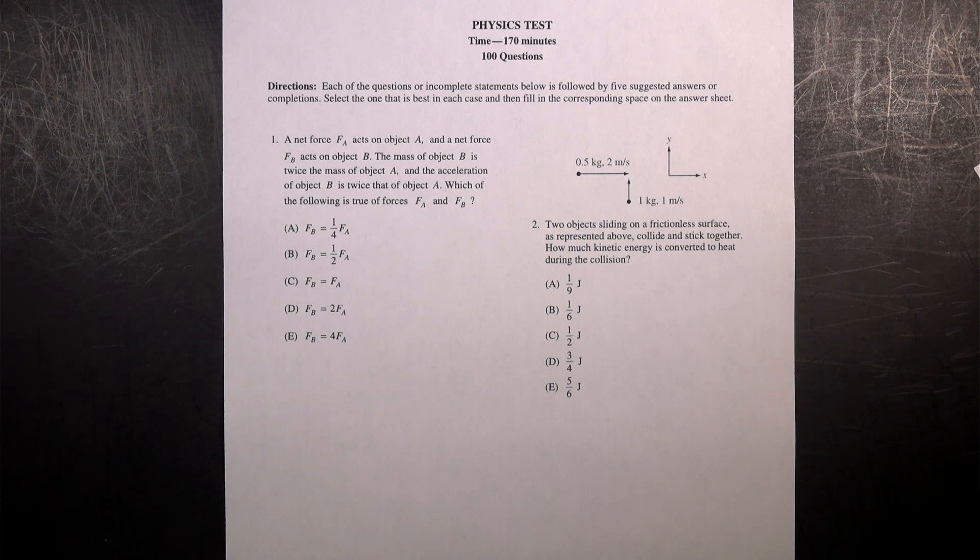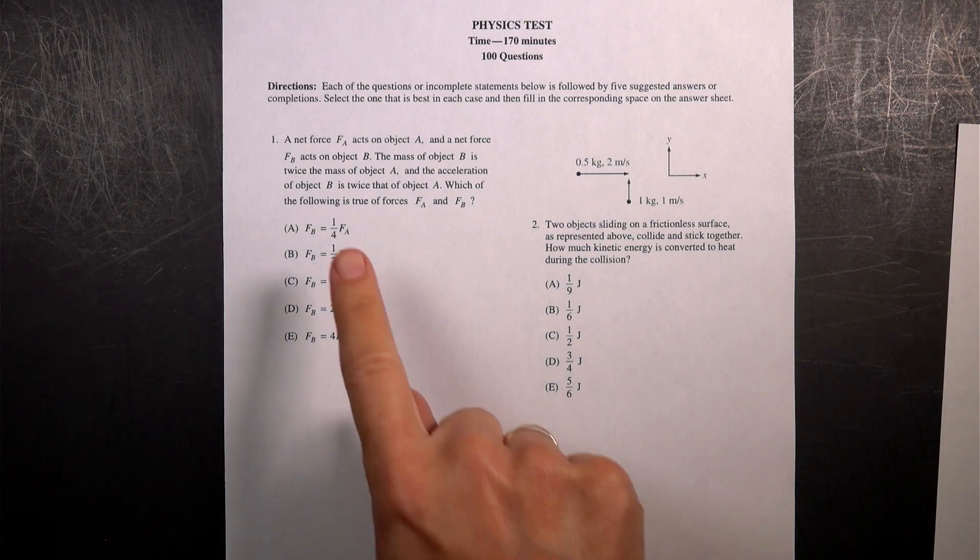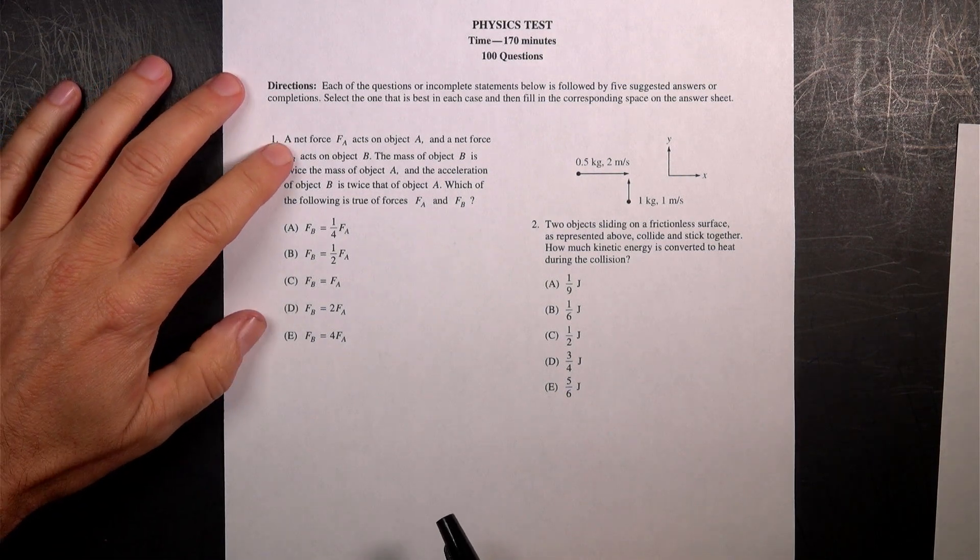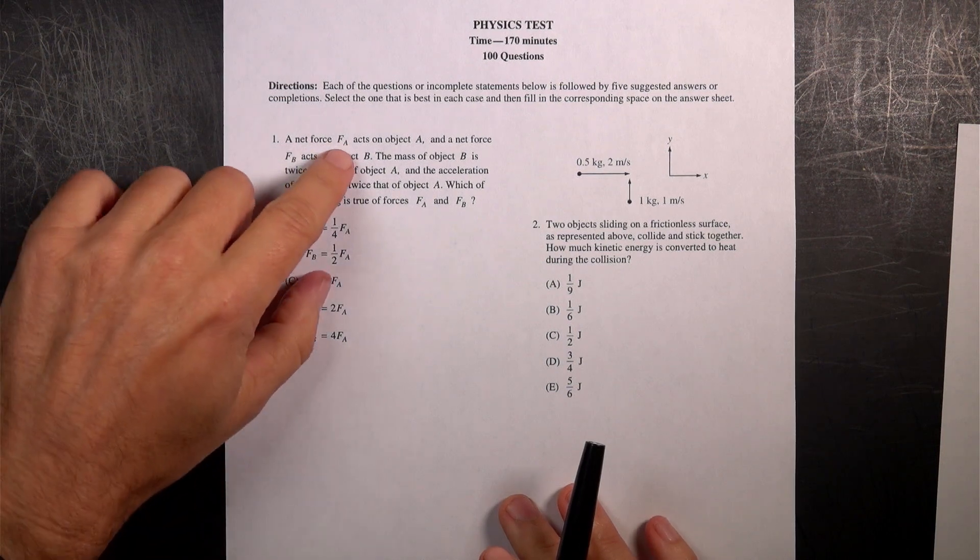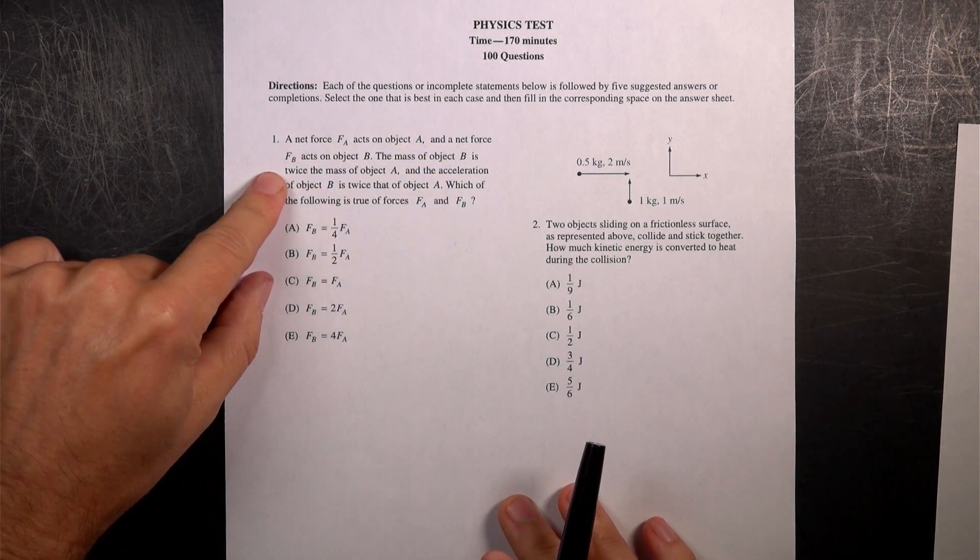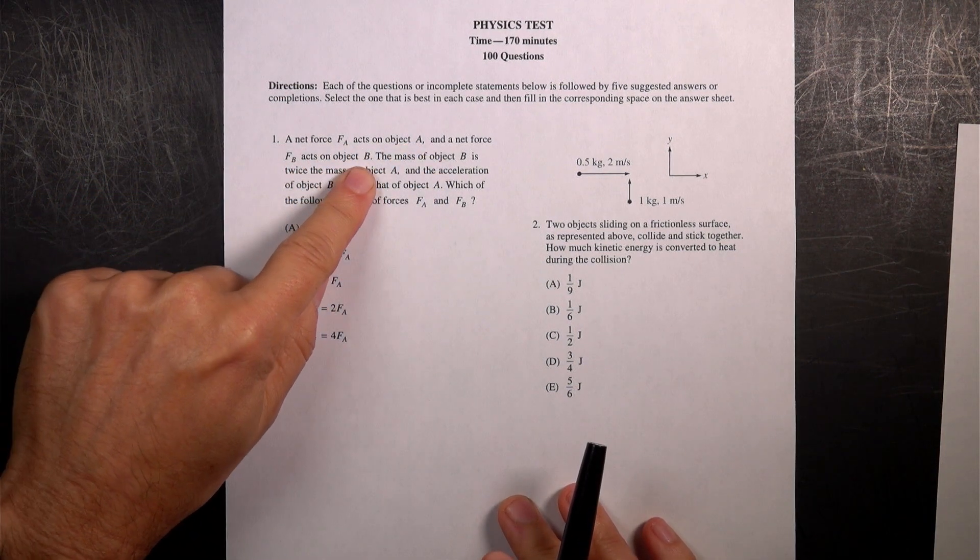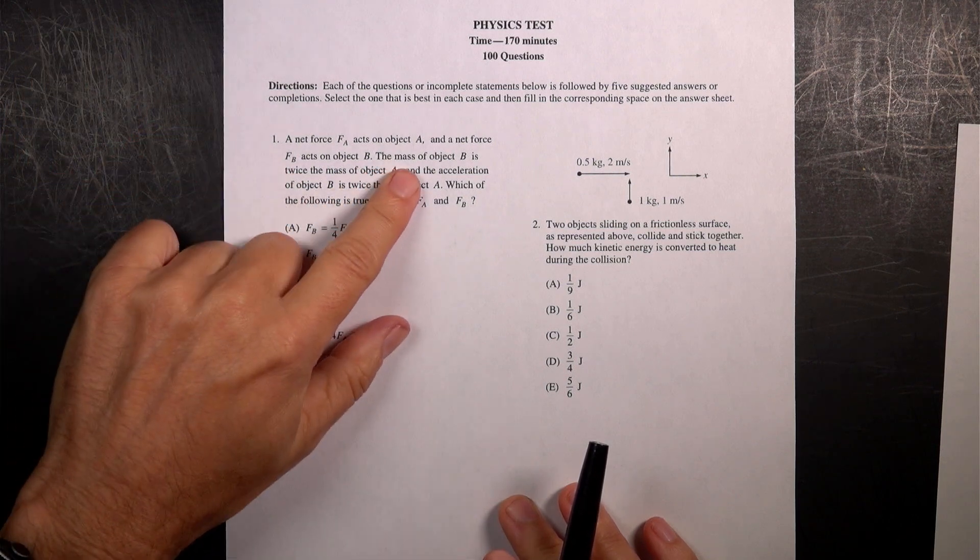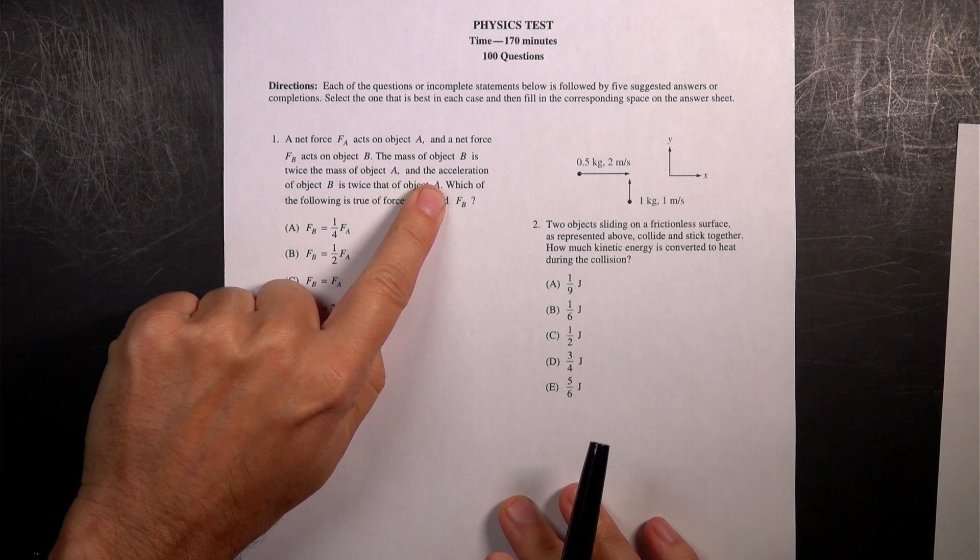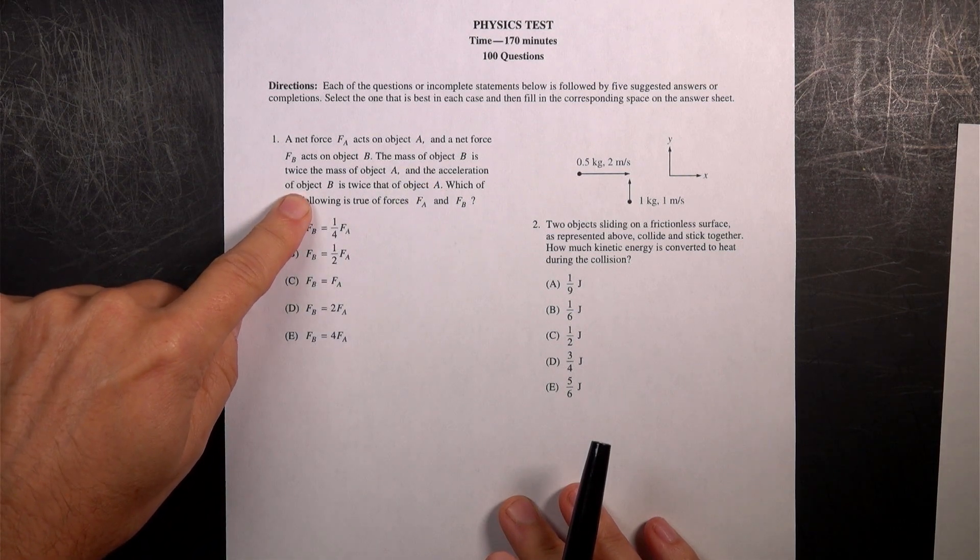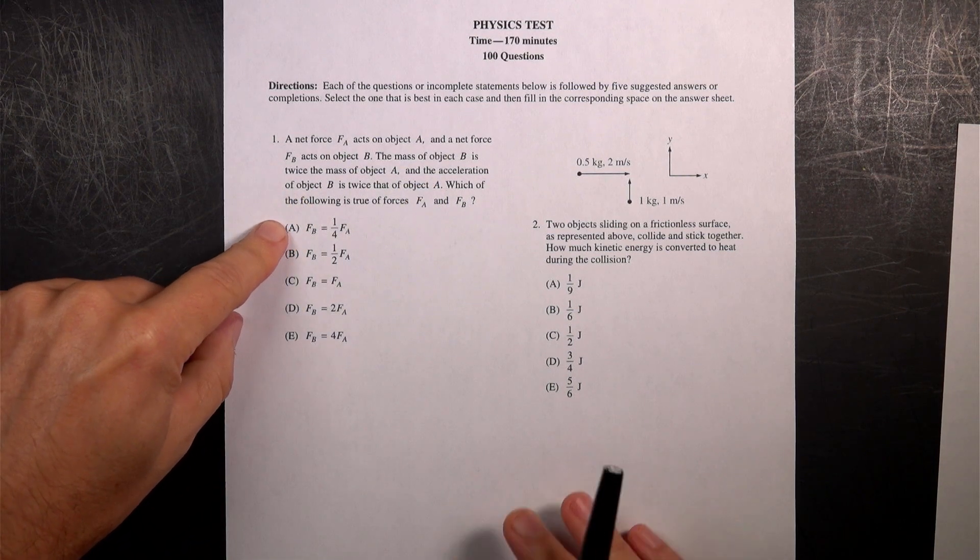So let's look at this first question, number one. It says a net force FA, not a vector. You can't really see that too well, but that's fine. Acts on object A and a net force FB acts on object B. So two different forces, two different masses. The mass of object B is twice the mass of A. Okay. And the acceleration of object B is twice that of object A. Which of the following is true?